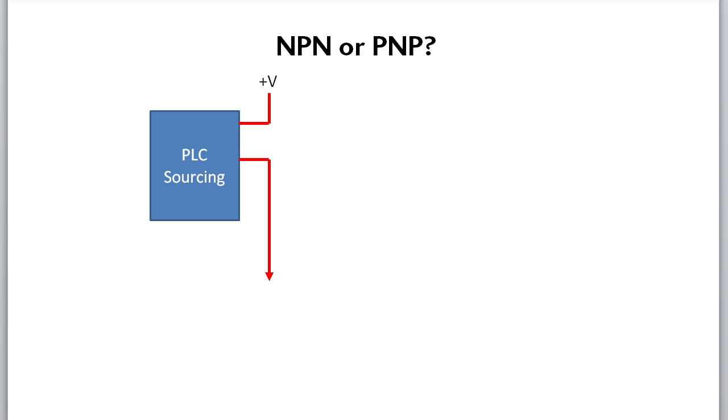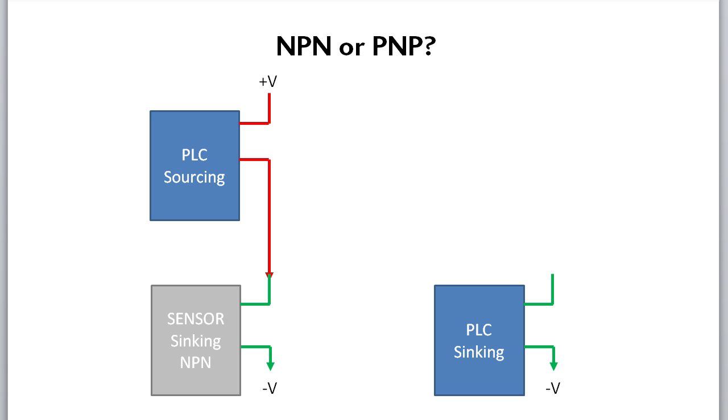If the PLC is sourcing current from the positive supply, then the sensor must be sinking current to the negative supply. If the PLC is sinking current to the negative supply, then the sensor has to provide the source of the current from the positive supply. How do you remember which is which?